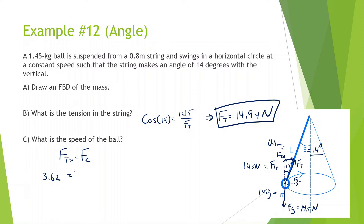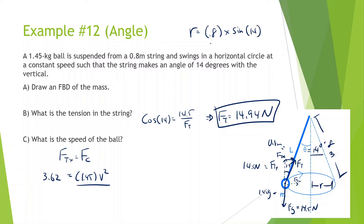This is equal to mv² over r. Mass is 1.45, v is what we're looking for. We don't know r, but the string length is 0.8 meters, so the radius equals 0.8 times sine of 14, which gives us 0.19 meters. So we do 3.62 times 0.19 divided by 1.45, and take the square root, giving us 0.69 meters per second.